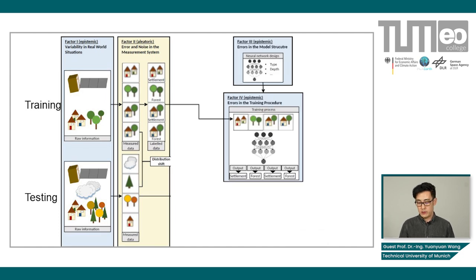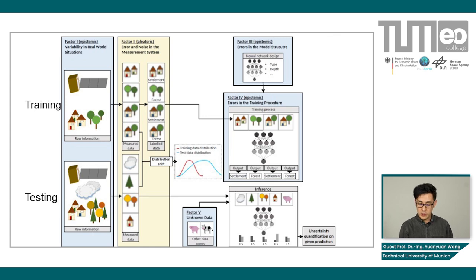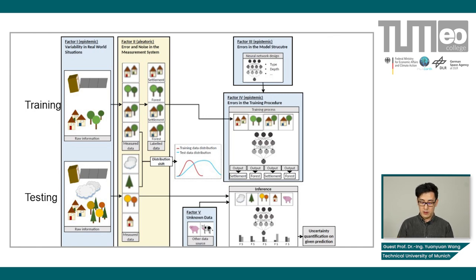When we feed training data into the network, the stochastic training process creates uncertainty in the model, and the structural deficiencies in the model create another level of uncertainty. Those are all epistemic uncertainties, and they can be reduced. In the inference stage, additional unknown factors — for example, an unexpected object — create additional distributional shift between test and training data. Those are the different types of uncertainty we face in a classification problem in earth observation.